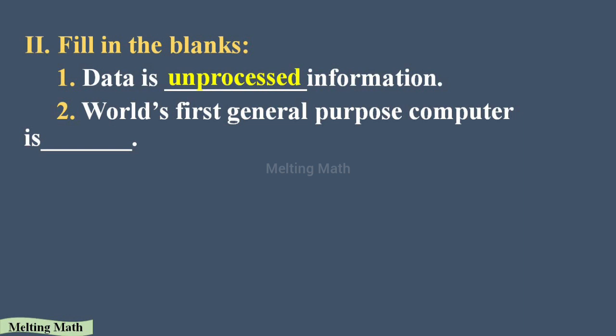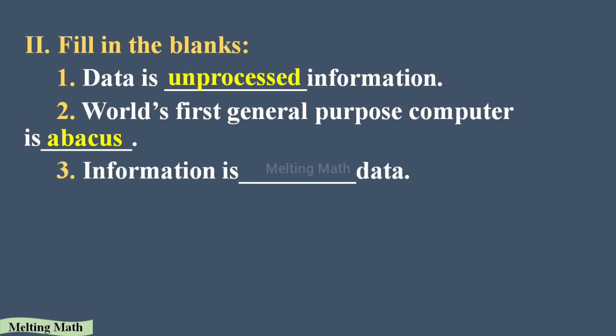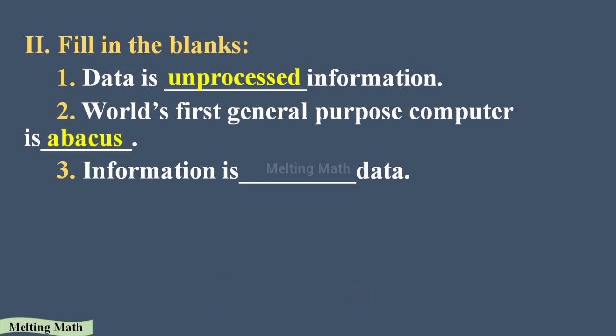Second: the first general purpose computer is __. That is the Abacus. Before computers were invented, people used the Abacus for mathematical purposes. Third: information is __ data. Information is processed data, because when we analyze the collected data, that becomes information — that is why it is called processed data.